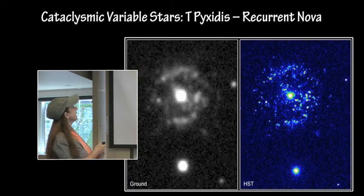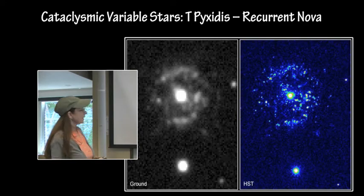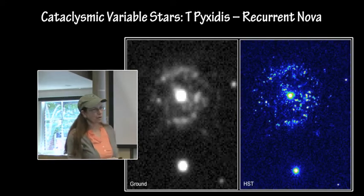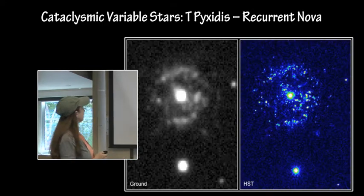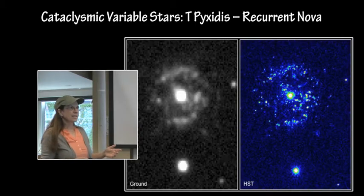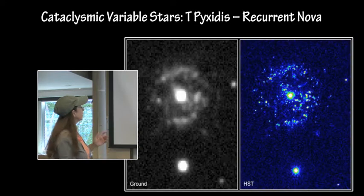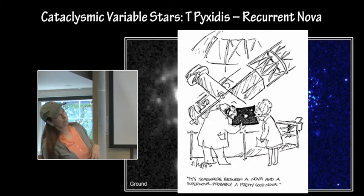Recurrent nova is T Pyxidis, a cataclysmic variable, as seen from the ground and as seen from Hubble. This one is kind of interesting. It took a while to figure out what kind of nova this was, so they made its own class, called recurrent nova. It's not a nova. It's not a dwarf nova.